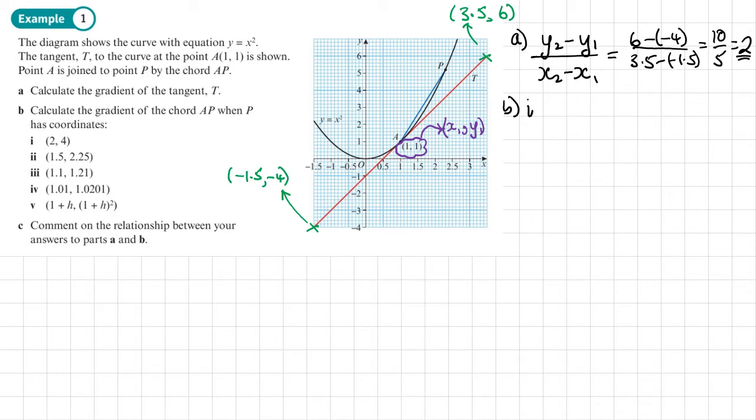In the first part of part b, what I have is my x2, y2 as (2, 4), so it'll be 4 minus 1 over 2 minus 1. That gives me 3 over 1 - I get a gradient of 3.